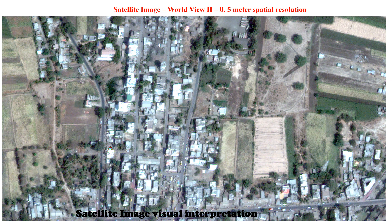This is a true color composite image captured by the WorldView-2 sensor, and the resolution of that image is 0.5 meters, meaning one pixel covers a 0.5 meter by 0.5 meter area of actual ground. In this image we can identify all features clearly. We can see the edges of roads, mark building footprints, mark the plot boundaries of agriculture, and identify vehicles on roads. Here is the parking lot of that region. We can identify trees as well, because this is a very high resolution satellite image.